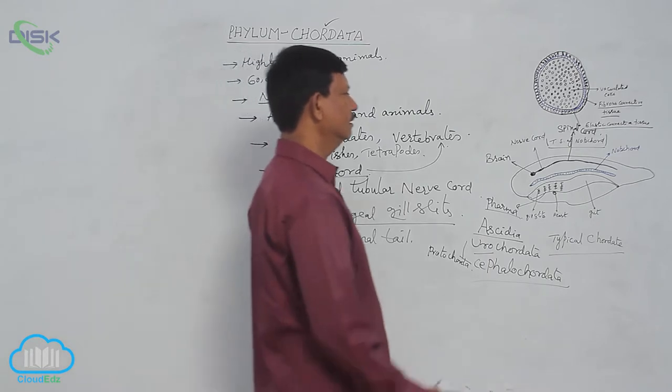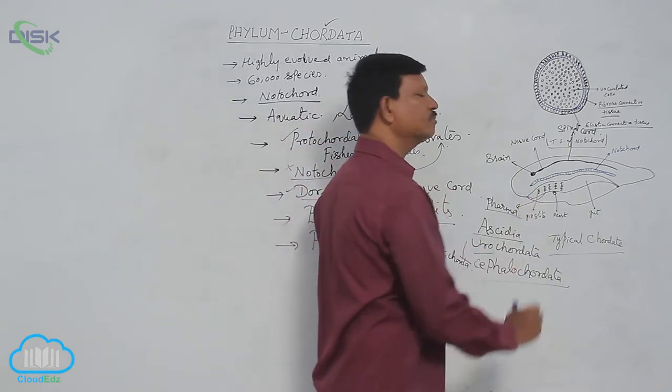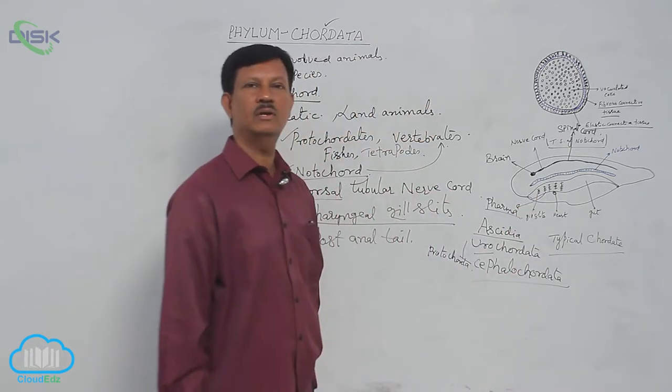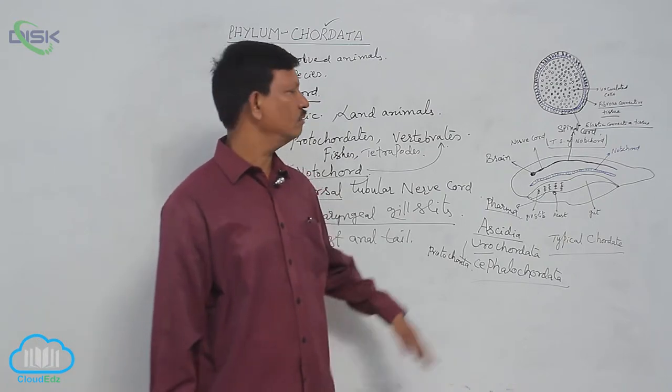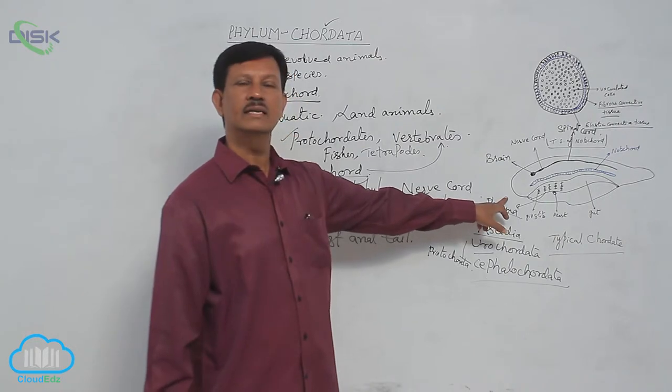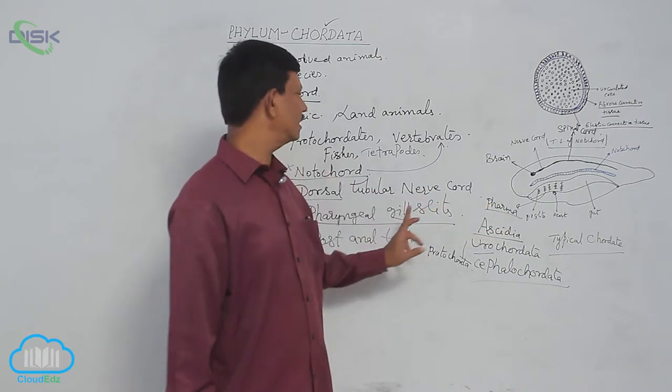In some animals gills are present throughout their life, for example cyclostomata, fishes, and larval forms of amphibia. But in some animals gills are absent.